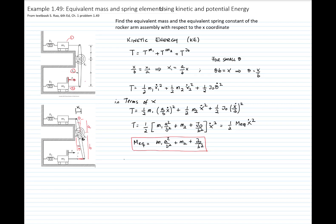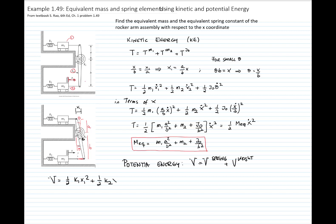Similarly, we have to do the same for potential energy to find the equivalent spring constant. The potential energy has components from the springs and the weight. We have two linear springs and one torsional spring, plus the weight. The spring potential energy terms are one-half K1 times X1 squared, plus one-half K2 times X2 squared, plus one-half K_torsional times theta squared. Then we have the potential energy of the weight, which is MGH.